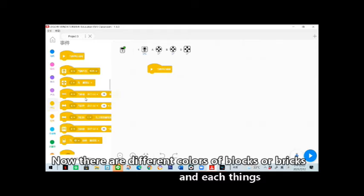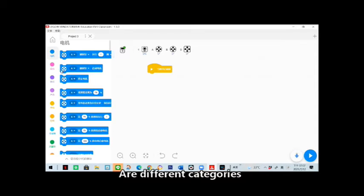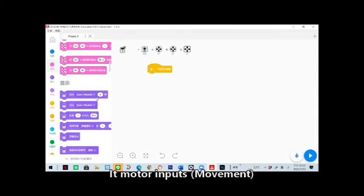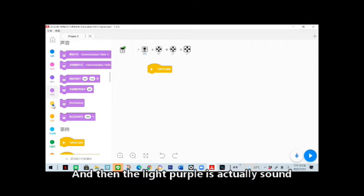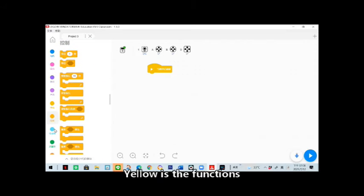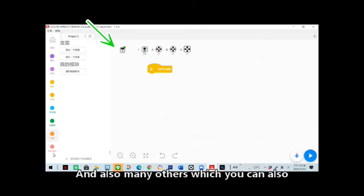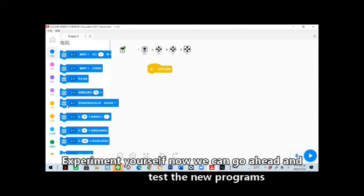Now there are different colors of blocks or bricks and each thing is different. So the blue one is the motor bricks, the pink ones are the motor inputs, the purple are the brick programs, and then the light purple is actually sound. Yellow is the sensors, orange is the functions, and also many others which you can also experiment yourself.